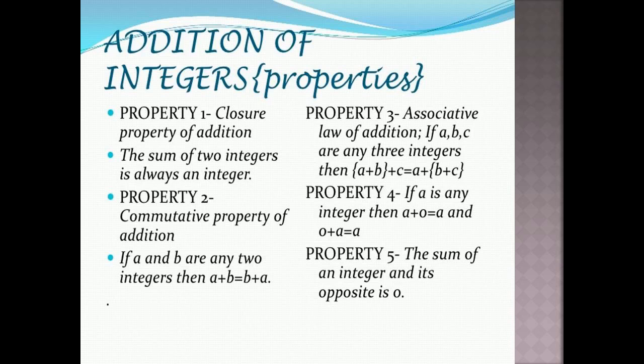In the previous video we learnt about the properties of addition of integers. The first property was closure property — it says that on adding two integers we will always get an integer. Then we learnt about the commutative property, which says that on adding integers in any order the sum will be the same. After that we learnt the third property, associative property, which says we can group integers in any order and it will not affect the sum.